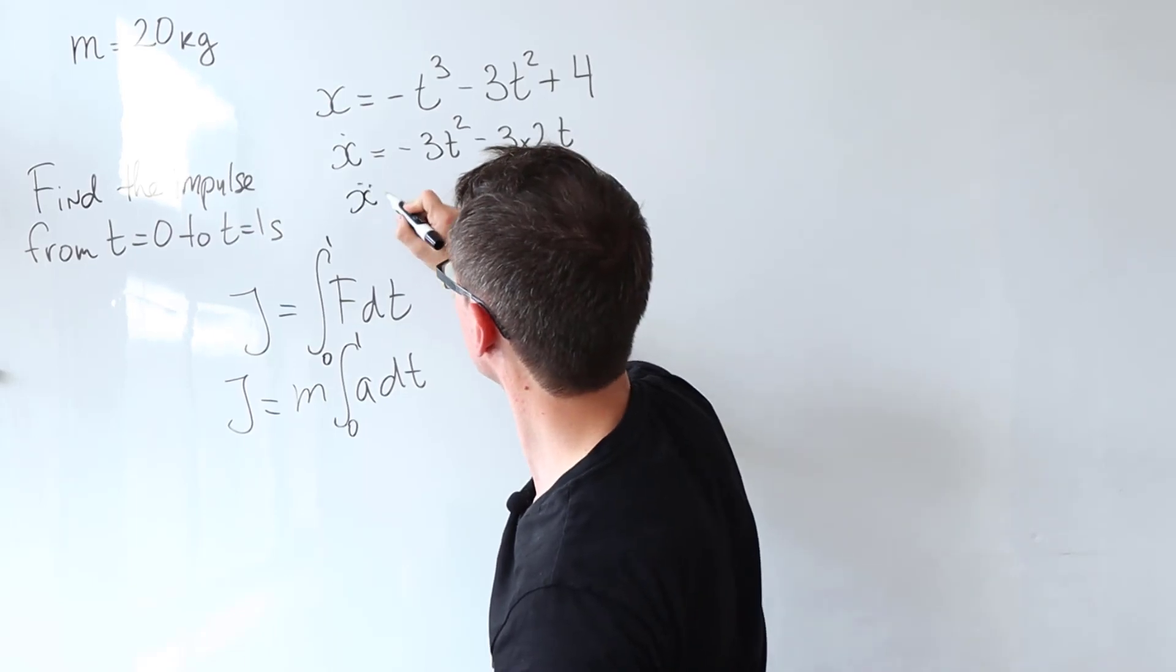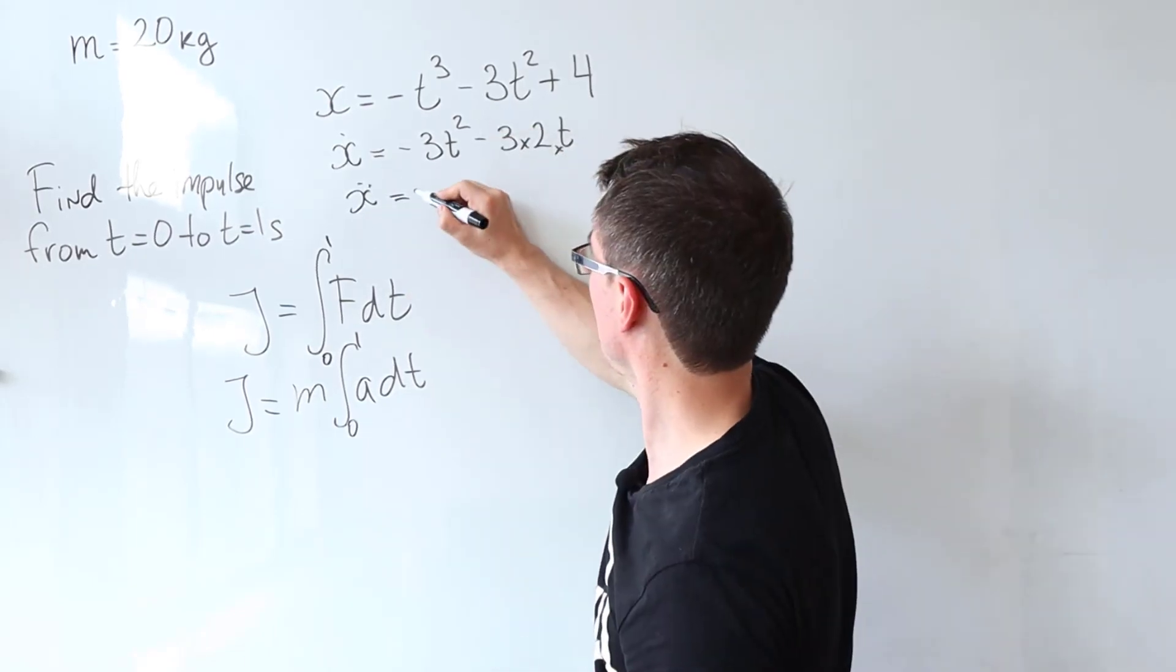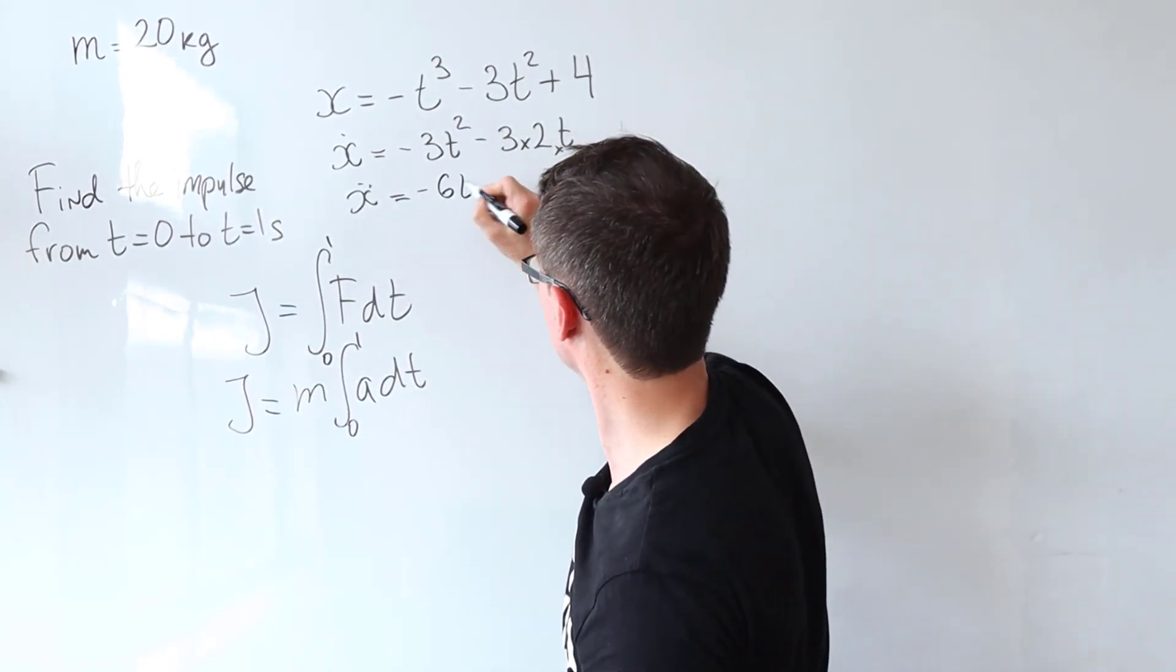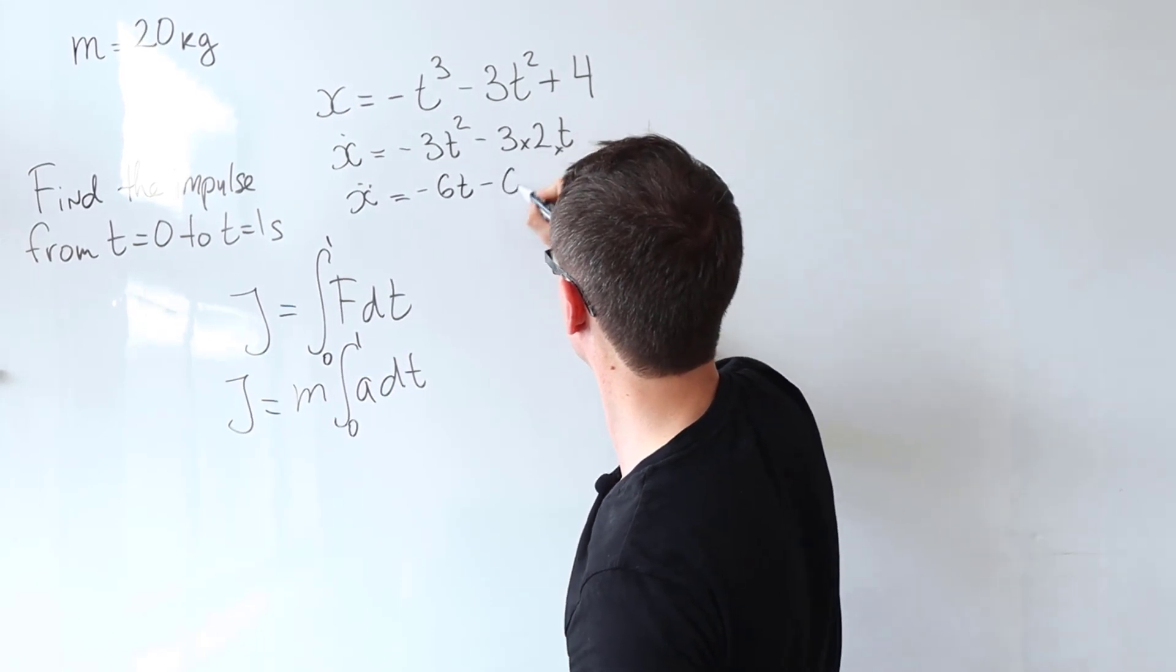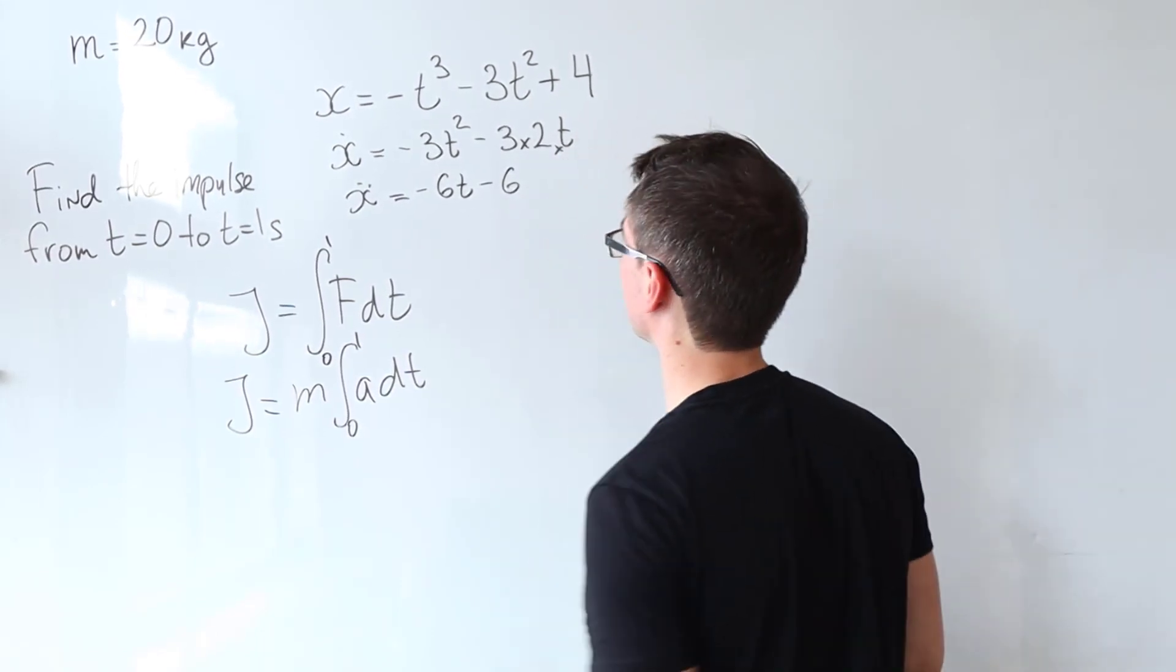The second derivative then will just be equal to minus 6t take away 6 and that's it.